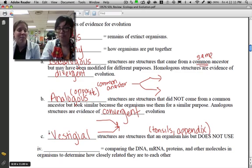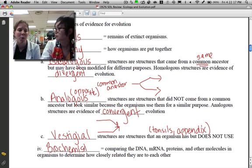The last main type of evidence for evolution is biochemistry. That's the study of DNA, amino acids, and other molecules that are in our bodies, and comparing them to other organisms and seeing how closely related we are. The more closely related we are, the more similar those things would be.